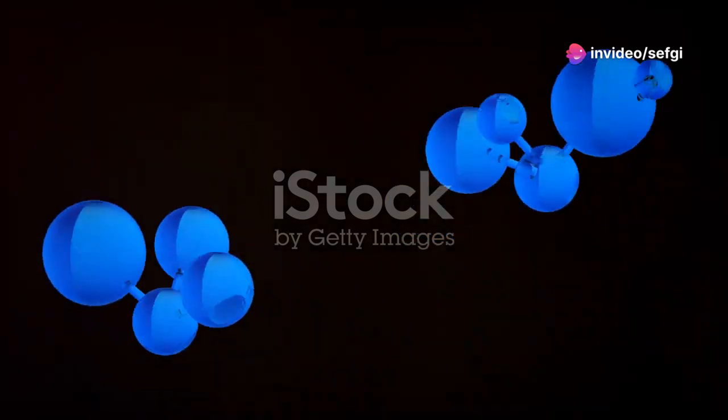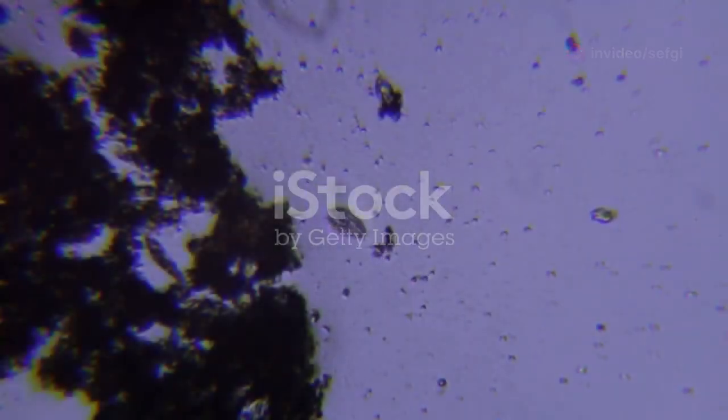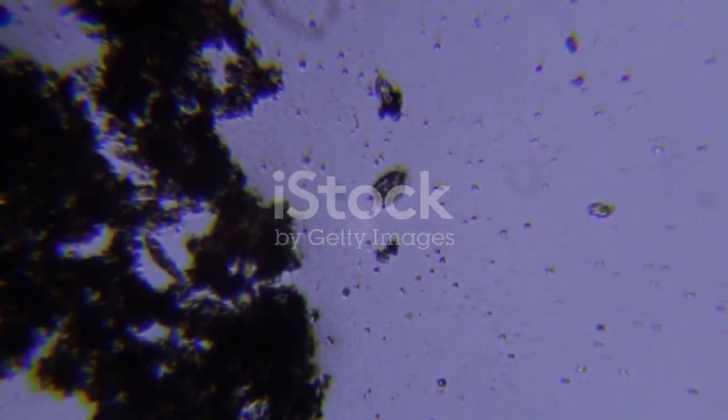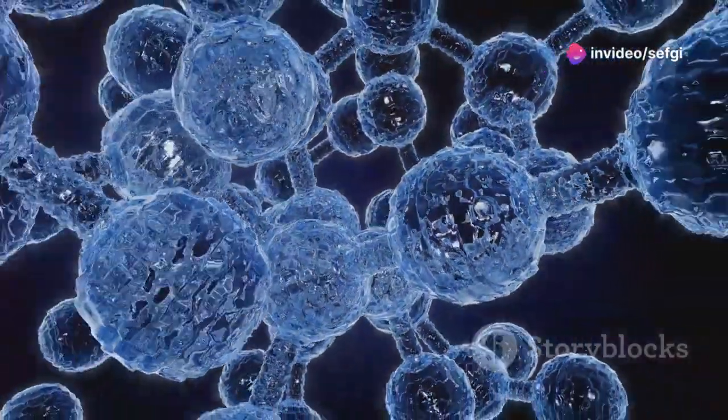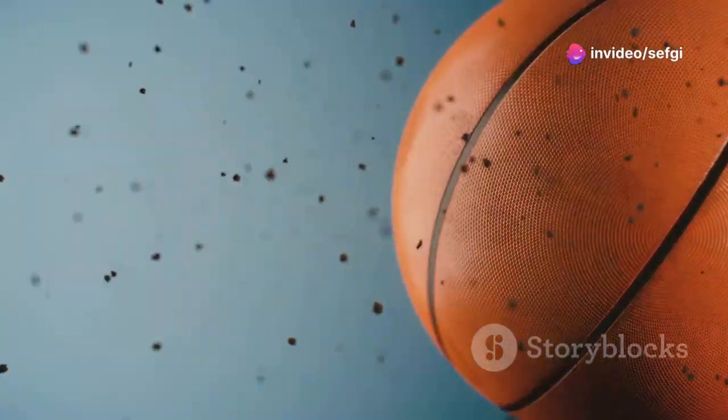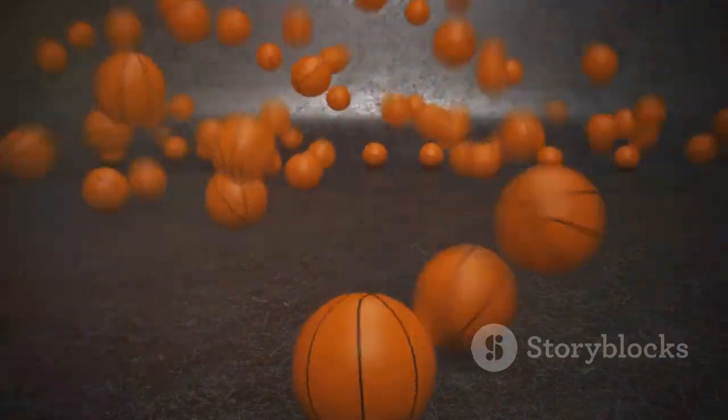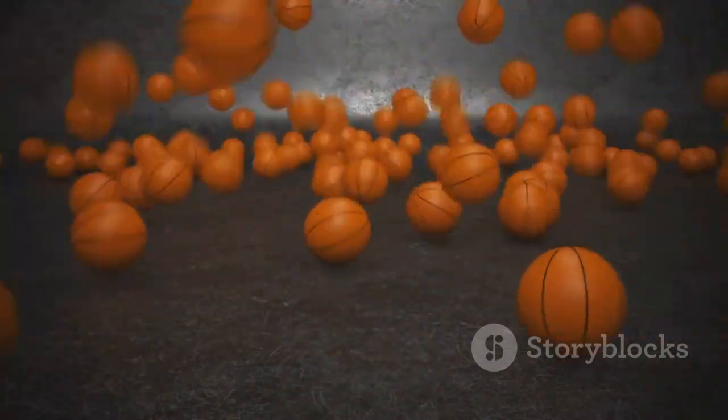So just how small is an atom? It's hard to comprehend their size because they are far smaller than anything we can see with our naked eyes. Imagine a single grain of sand. That grain contains billions upon billions of atoms. To give you a better idea, if an atom were the size of a basketball, then a basketball would be the size of the entire earth. That's incredibly small.